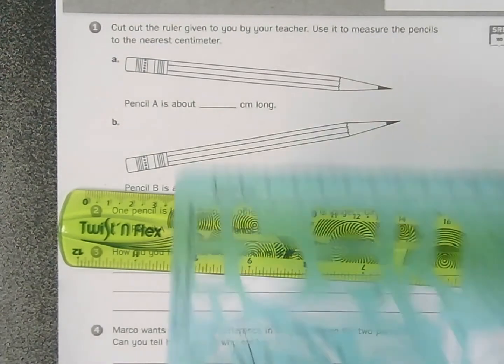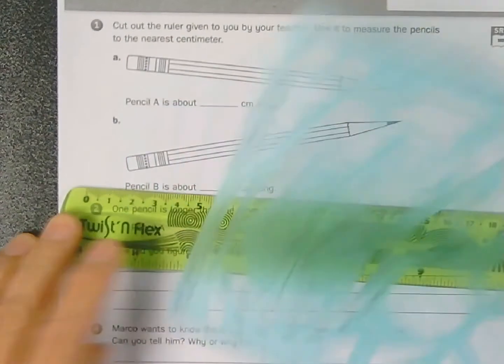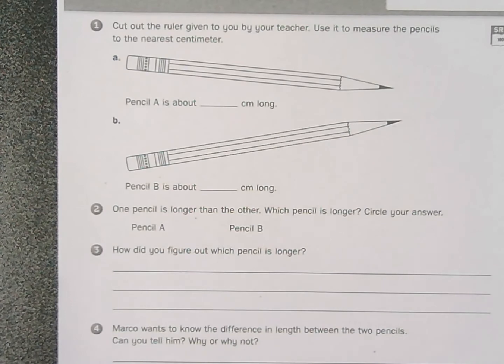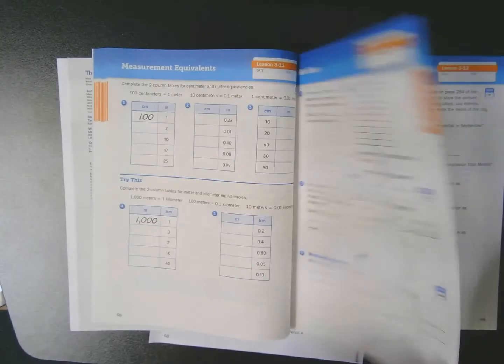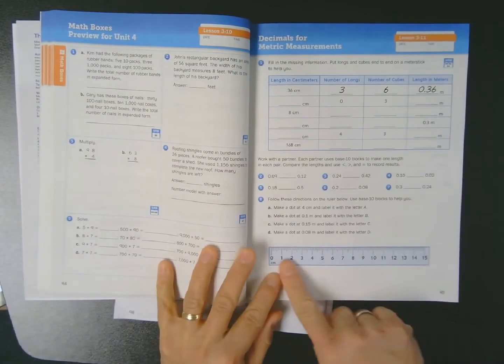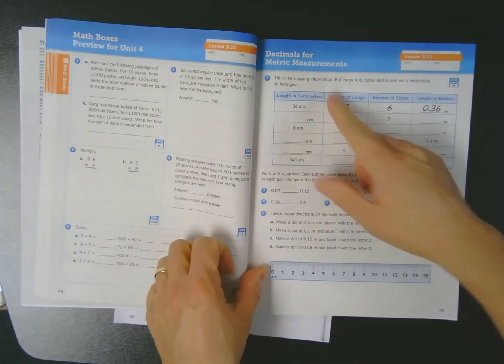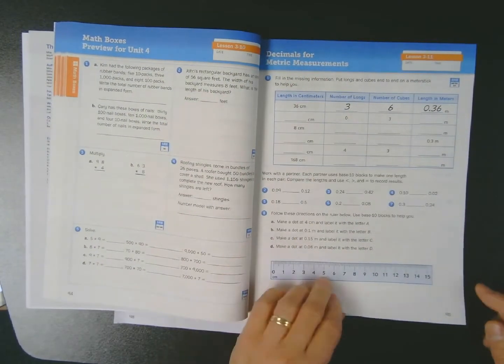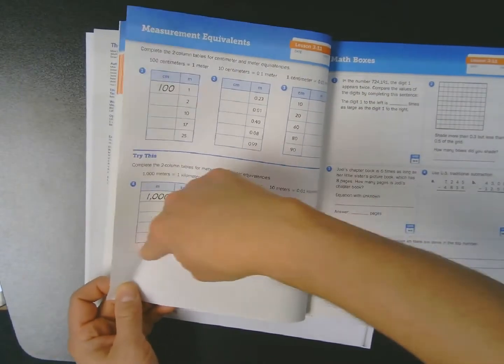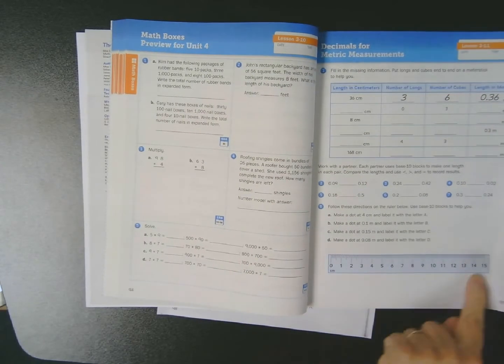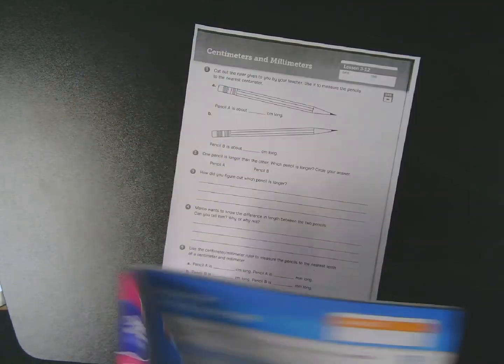But you might actually have access to a real ruler, or if you are in my math class you were given a math template which has a ruler side on both ends. Or worse comes to worse, you can go back to your journal and go back to the previous lesson 311 and you can go to the page that has a ruler printed right on it. It was for our metric measurements lesson, and since there's nothing printed on the back side that would be affected if you cut this out, if push comes to shove you could always cut this out if you needed a ruler.